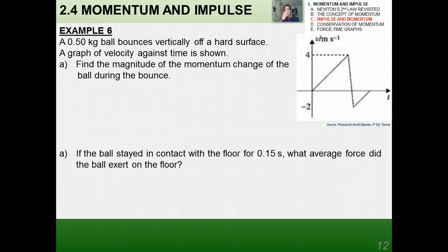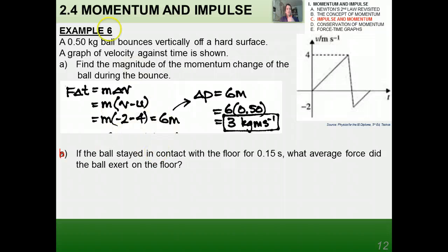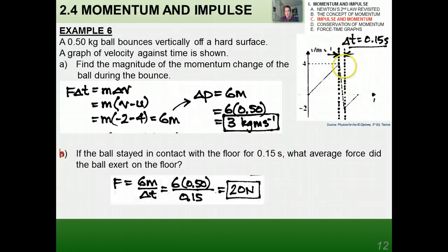And here's our last example. Go ahead and try this one on your own before you see my solution. I have a 0.5 kilogram ball bouncing vertically off a hard surface. So this is a VT graph, actually. Find the magnitude of the momentum change of the ball during the bounce. I got 3 kilogram meters per second, and the way I do it is as follows. I figure out what delta V is. And I know that delta P would be six times the mass. So six times the mass is 3 kilogram meters per second. If the ball stayed in contact with the floor for 0.145 seconds, which is this interval right there, what average force does the ball exert on the floor? I got 20 newtons. So make sure that you get the same answers that I got. And if we need to go through any of these in class, I'm more than...